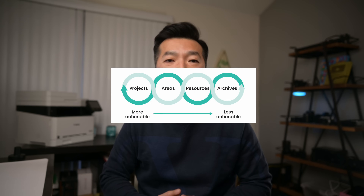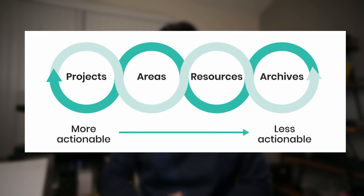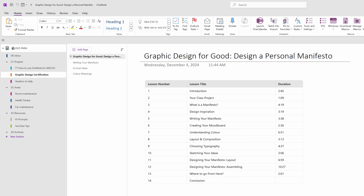The PARA Framework is designed to be flexible and dynamic, allowing information to flow between categories based on its relevance to what you're currently working on. For instance, I'm learning graphic design on Skillshare and have set a goal to complete the classes within 45 days. So this effort would initially sit in Projects, since this is a temporary effort with a clear objective. I have my list of lessons or videos I need to watch.